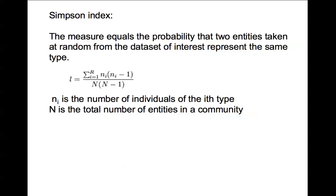The Simpson's index measures the probability that two entities taken at random from the dataset represent the same type. If there's low evenness — things aren't evenly distributed — you'd expect to draw the same species multiple times, because it has a higher representation in the community than other species do.